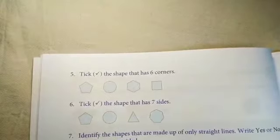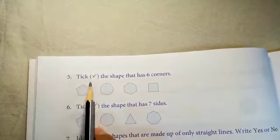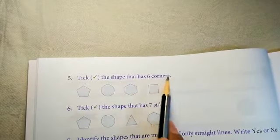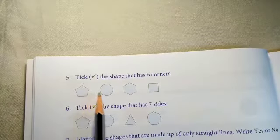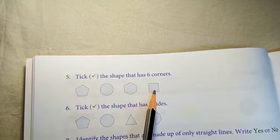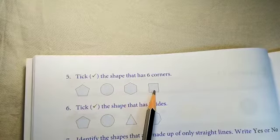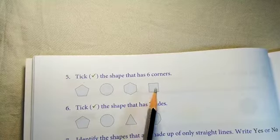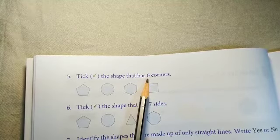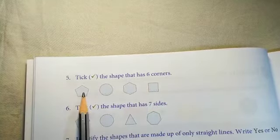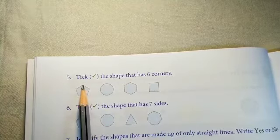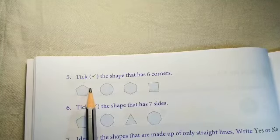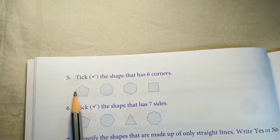Now, question number 5. Tick the shape that has six corners. Here you are given one, two, three and four different different shapes. We have to count the number of corners and we have to tick on the shape which has six corners. First shape. We will count the corners. Here 1, 2, 3, 4 and 5.